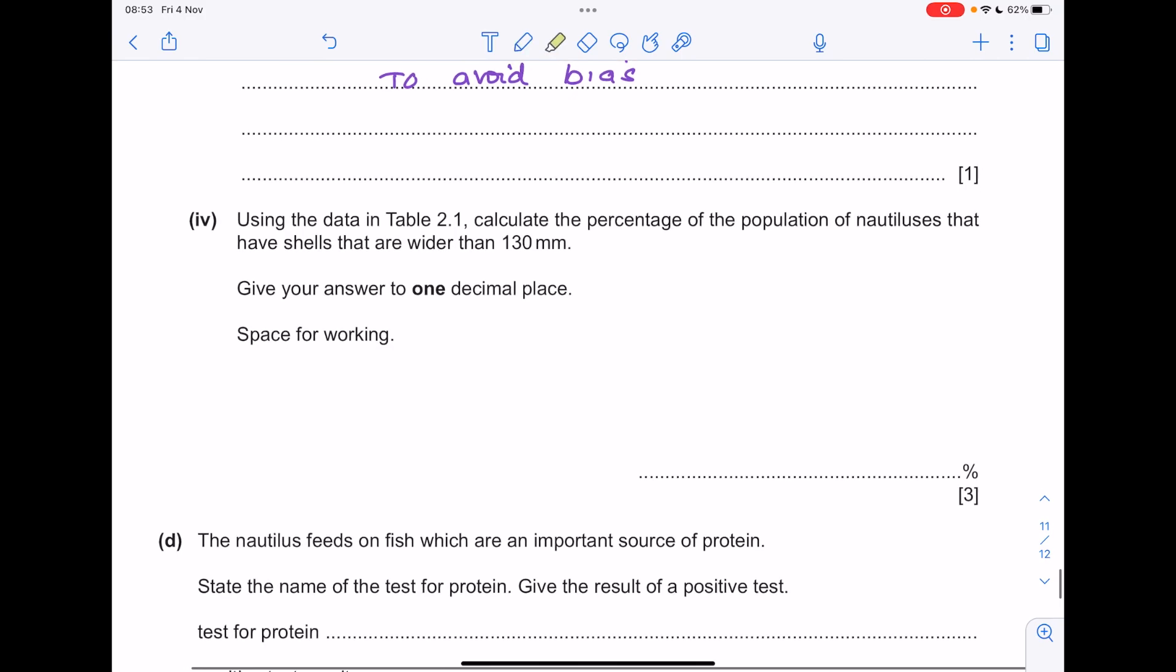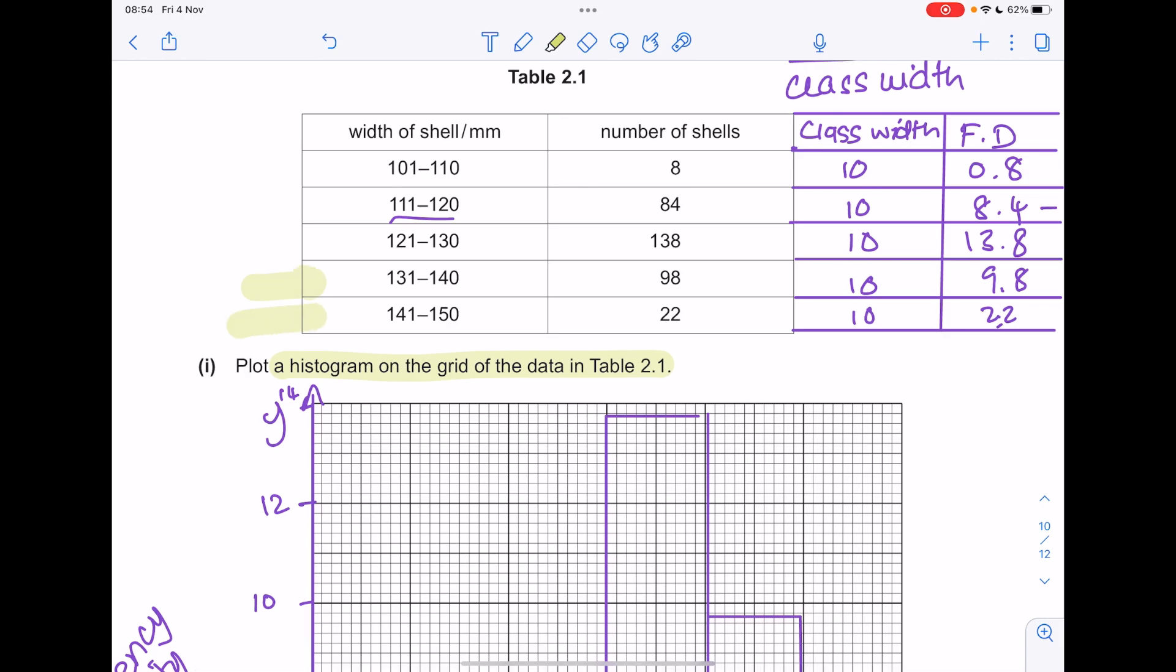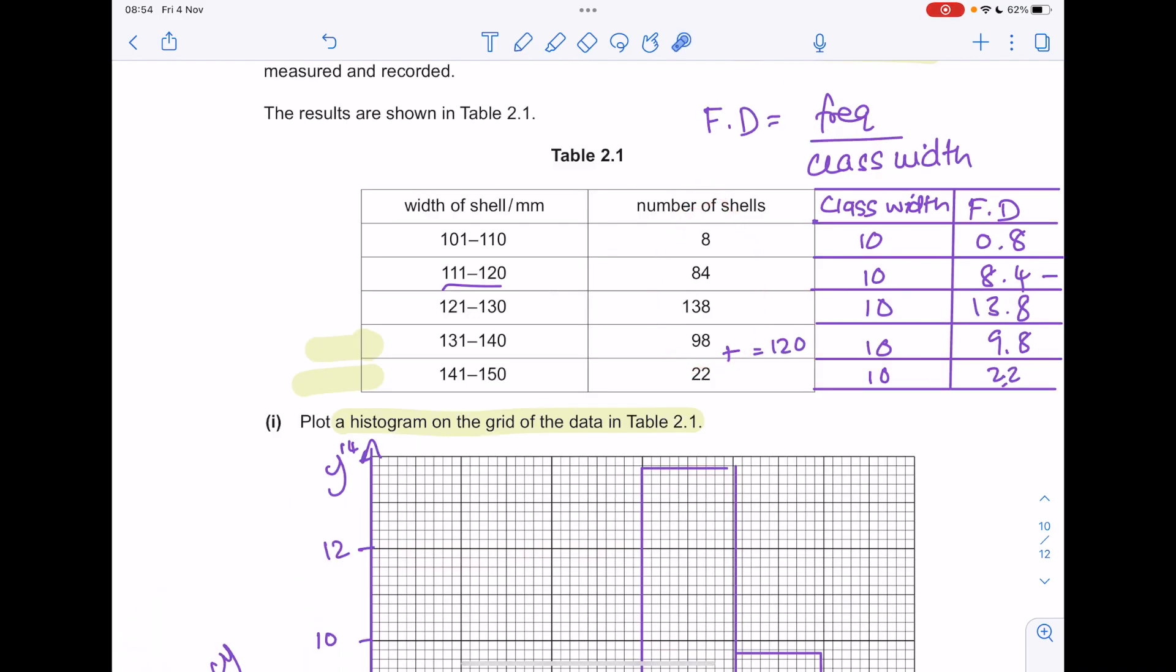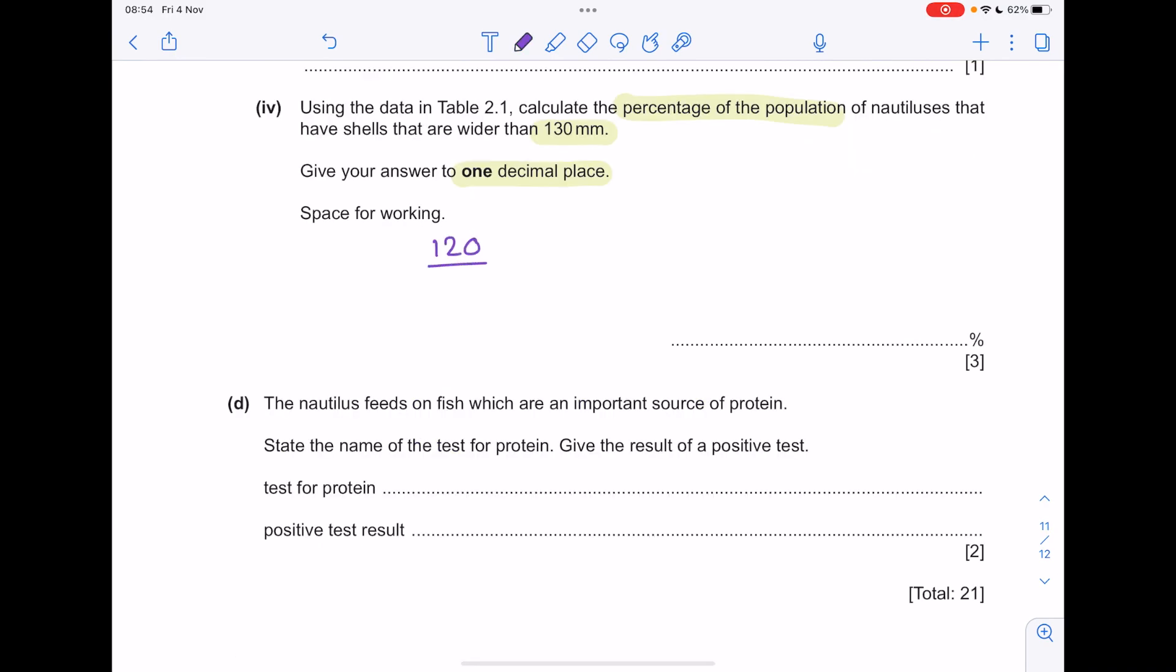Using the data in table 1, calculate the percentage of the population of nautiluses that have shells that are wider than 130 millimeters. Give your answer to 1 decimal place. So we're interested in these two rows, so you want to add up these two numbers and put that number over the total number of shells. That becomes 120 over 350 times it by 100. To one decimal place, our answer is 34.3.